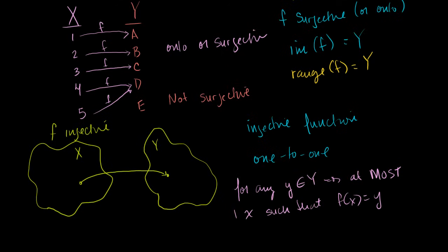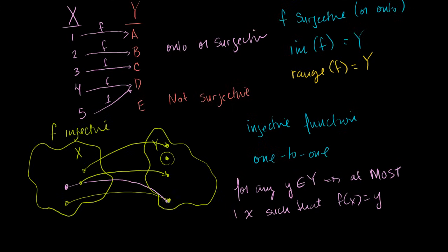There might be no x's that map to a given y — for example, a member of Y that never gets mapped to. That would mean it's not surjective, but it could still be injective as long as every x gets mapped to a unique y. If two or more x's map to the same y, then we're not dealing with an injective or one-to-one function.